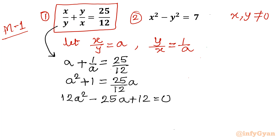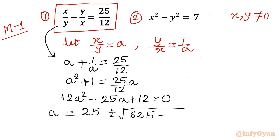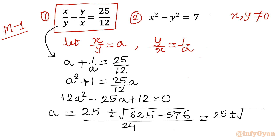This is a quadratic equation. We will solve it using the Sridharacharya formula. Writing a equals minus b, that is 25, plus or minus the square root of b squared minus 4ac — so 625 minus 4 times 12 times 12, which is 576 — all divided by 2a, which is 24. This simplifies to 25 plus or minus the square root of 49, over 24.